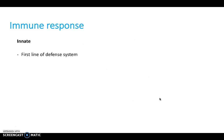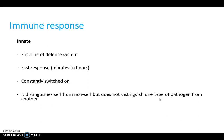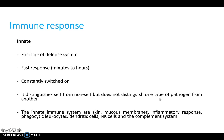The innate immune response is our first line of defense. It's fast and responds in minutes to hours to a foreign invader. It's constantly switched on, constantly circulating in the body and looking for new foreign non-self pathogens. The problem is it doesn't distinguish one type of pathogen from another, but the upside is that it's fast — responding in minutes to hours — which is really important as our first line of defense.